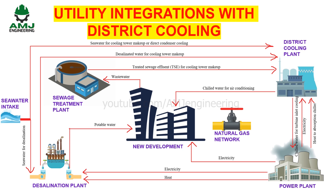Natural gas is frequently the ultimate source for district cooling. Most often it fuels power plants that provide the electricity to drive district cooling plants. Sometimes it is used directly in district cooling plants to fuel gas engines that generate electricity for electric chillers. Therefore, district cooling plants that use natural gas can relieve pressure on government investment in power plant, transmission, and distribution infrastructure.